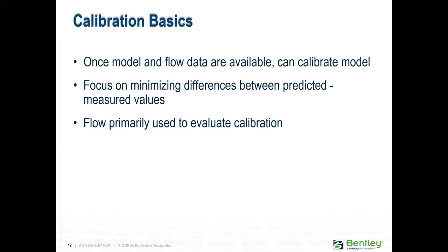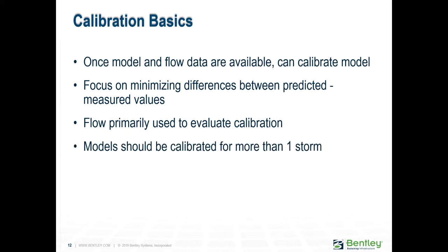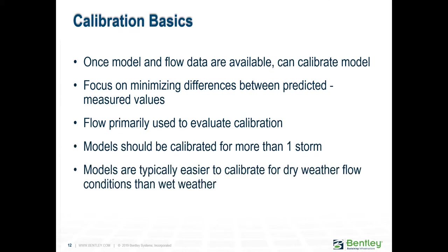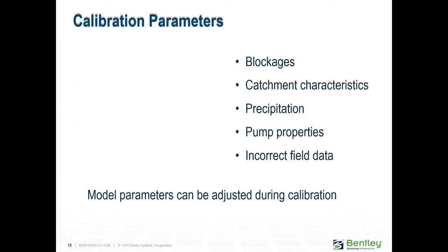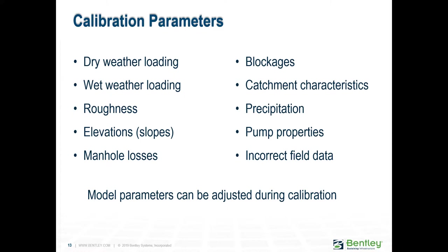Wet weather is typically more difficult to calibrate due to uncertainty in the location and nature of defects and spatial and temporal variations in precipitation. The key to calibration is to determine why the model and field measurements differ and make the necessary adjustments. Sometimes field data are incorrect — make sure sensors are calibrated as well.